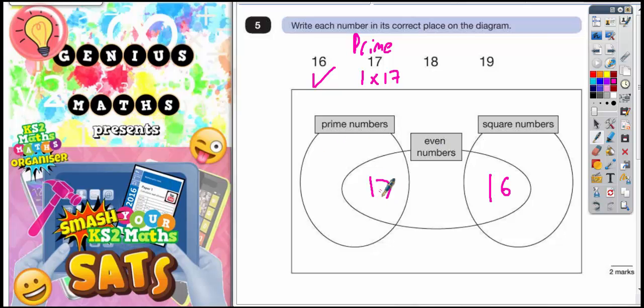So you can't put 17 there because that would be inside the even section of the diagram. So it's got to just go there, 17. So 17 done.